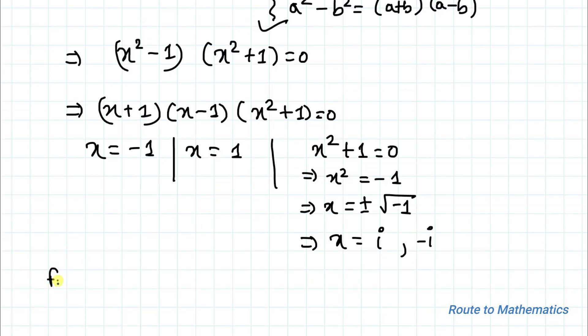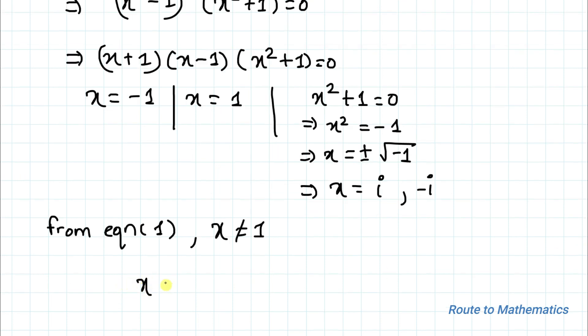Since from equation 1, x cannot equal 1, hence x = -1, i, -i are the answers. I hope you have understood the solution. Thanks for watching. Please subscribe to my channel and click the bell icon for more such interesting videos. Thank you.